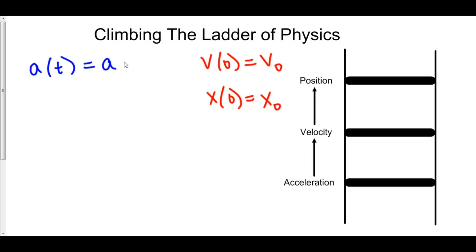Our acceleration is constant — it's negative 9.81 meters per second squared, it's gravity. And if we have initial velocity v-naught and initial position x-naught, let's go from constant acceleration up to our position function using these two initial values.